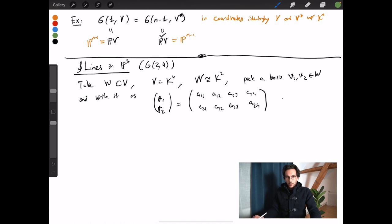So let's see what would have happened if we had chosen another basis for w. Now, if we pick another basis, v1', v2' of w, then there exists a matrix, an invertible matrix, 2 by 2,